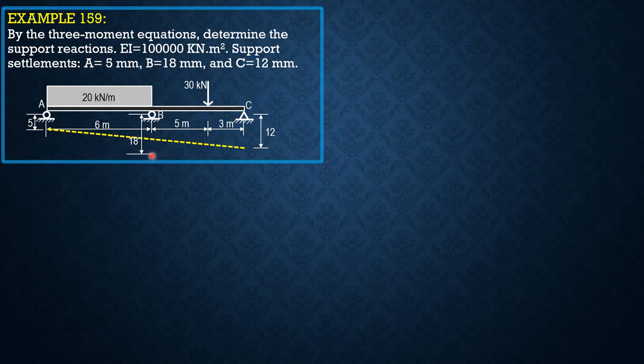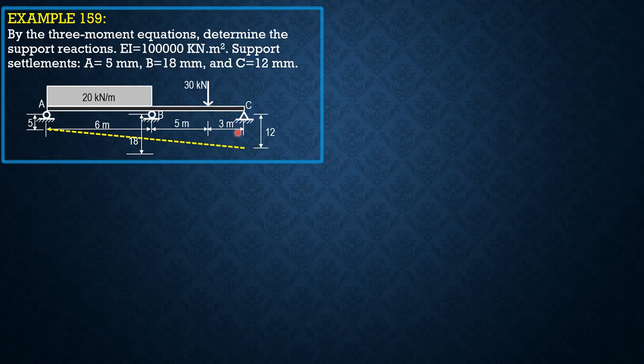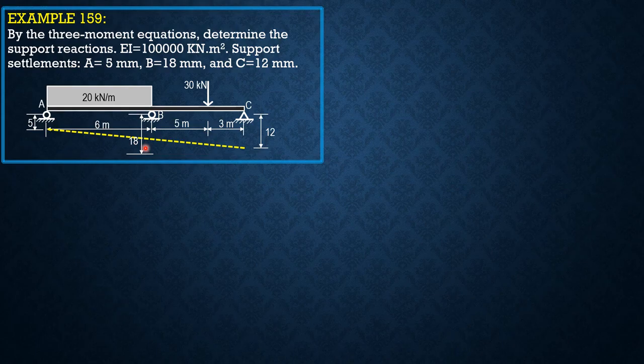Therefore, if the reference is at B horizontal line, the reference is at B, then HA would be 13 mm above B horizontal line through B, and C will be 18 minus 12, 6 mm above B.